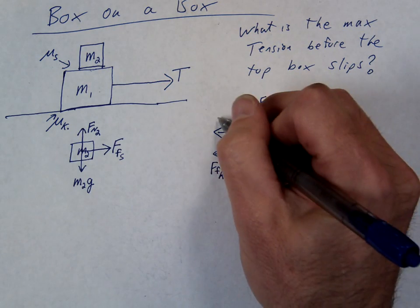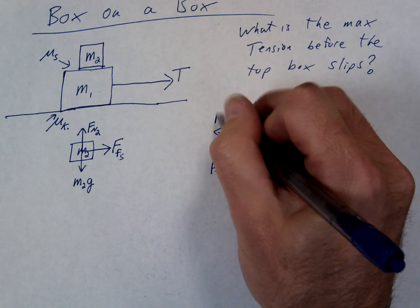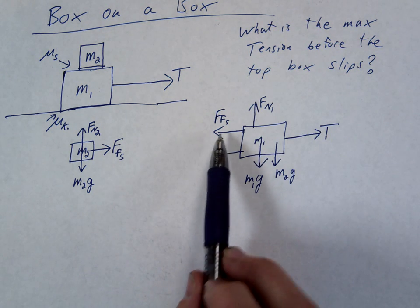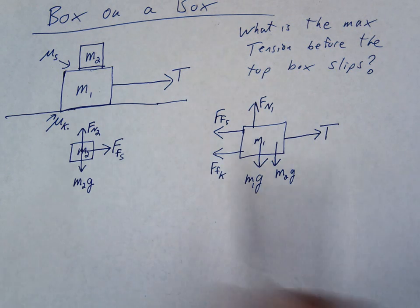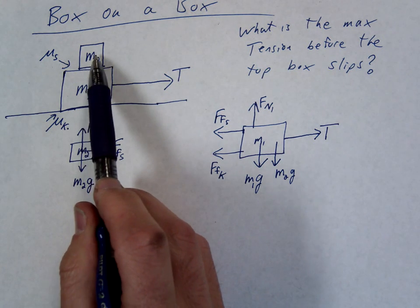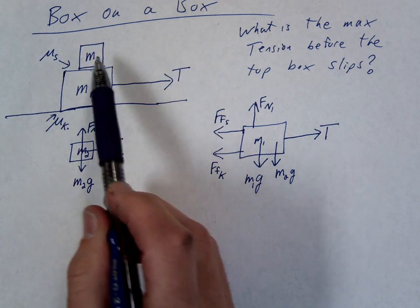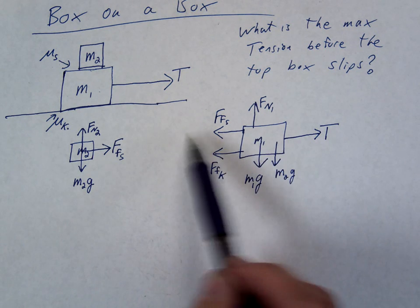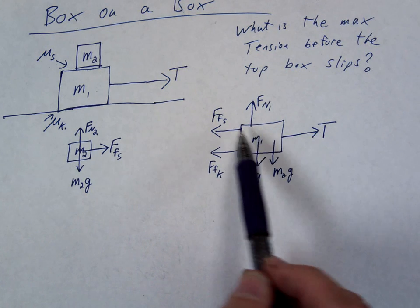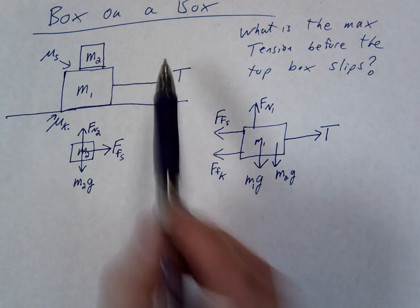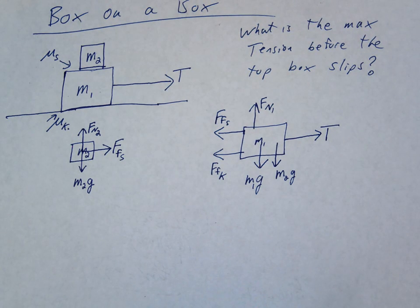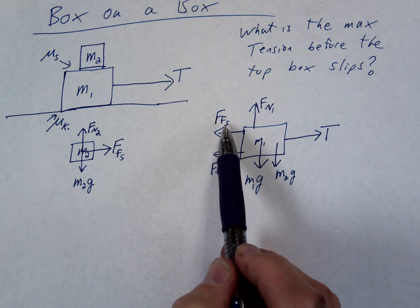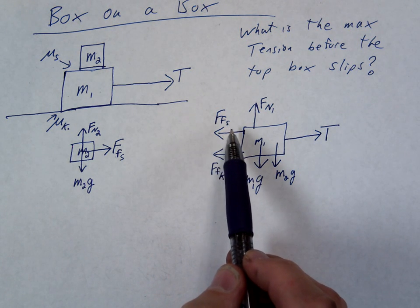So this one we're going to call force of friction static. And notice conceptually this should make sense. If this block pulls on M2 with the force, what should M2 do to M1? Pull back with an equal and opposite force. So that's Newton's third law again. This pulls with this force, this pulls with the equal and opposite force. And those are the same. This FFS and this FFS are the same.